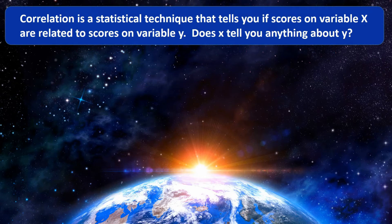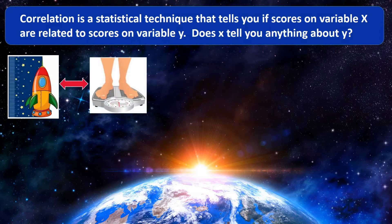Assuming you know something about these topics, let's proceed with a very basic definition of what correlation means. Correlation is a statistical technique that tells you if scores on variable X are related in any way to scores on variable Y. In other words, does X tell you anything about Y? If there is a relationship, then knowing something about X will tell you something about Y.